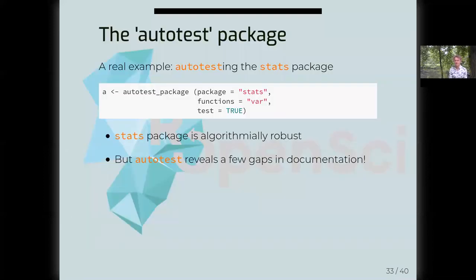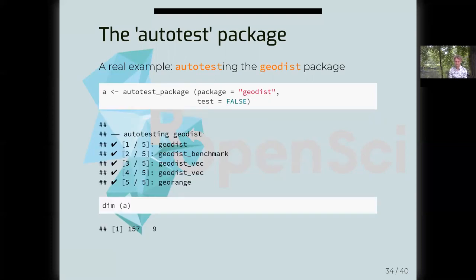The stats package is algorithmically robust — AutoTest does not reveal any algorithmic problems whatsoever, but it does reveal a few gaps in documentation which could and maybe should be addressed to make the stats package more robust and user-friendly. Just to conclude, I will show a package which generates a much more rich array of warnings and errors — and it's one of my own packages. I'm about to reveal a way in which a package is not coded very well at all, and it's only fair that I choose my own package, which prior to this talk I had not applied AutoTest to.